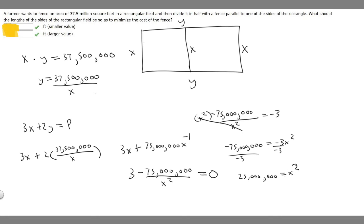So now we can solve for one of our sides. If we just square root both sides, that's going to cancel. And then the square root of 25,000,000 is just 5,000. So x is going to be equal to 5,000.